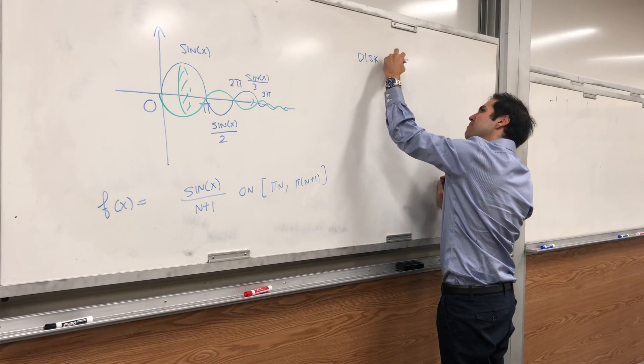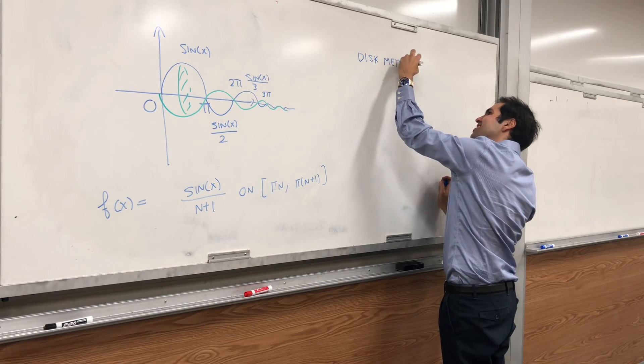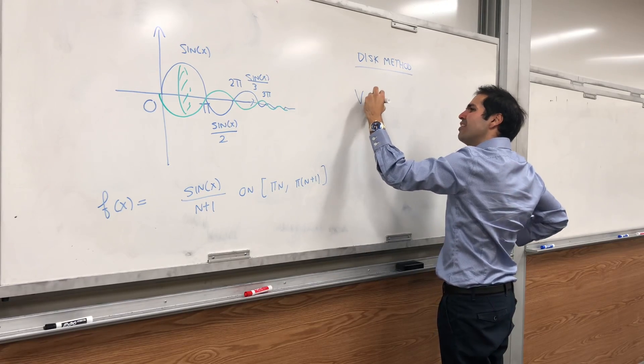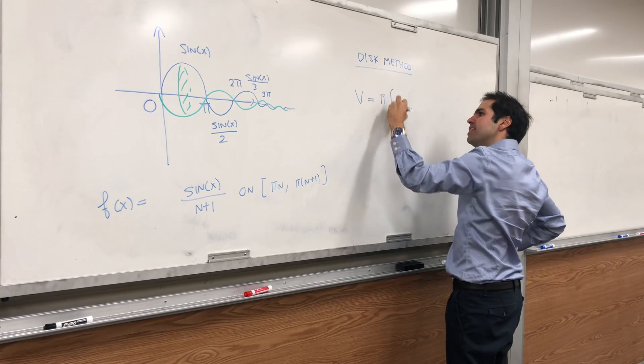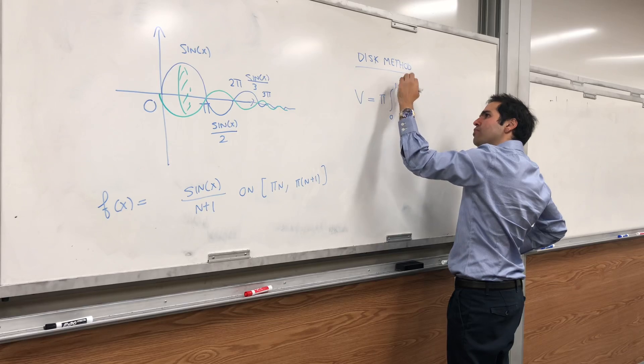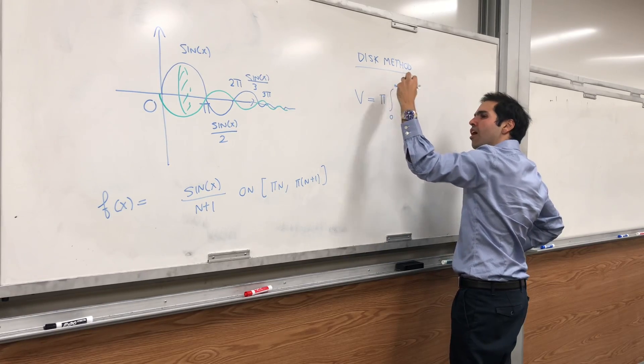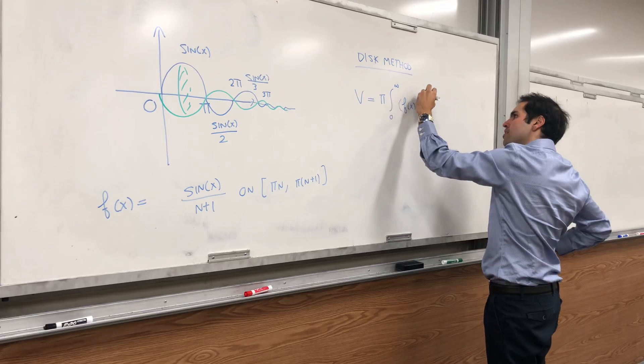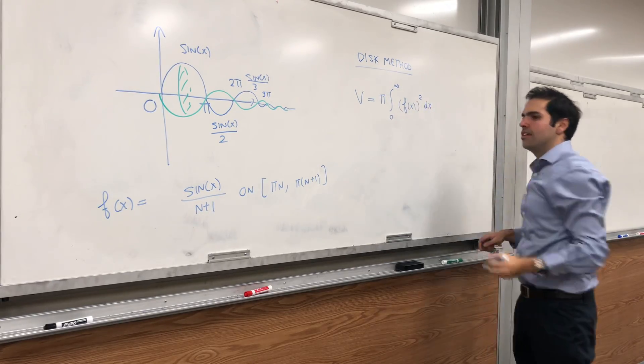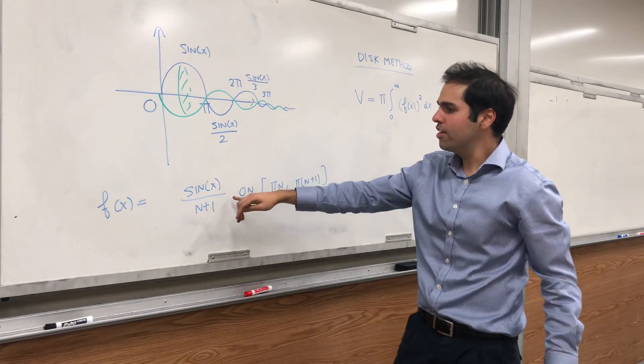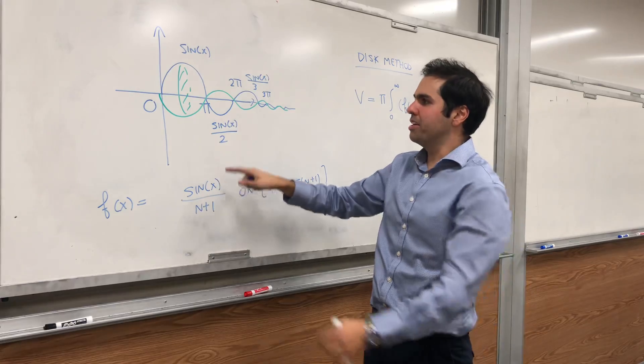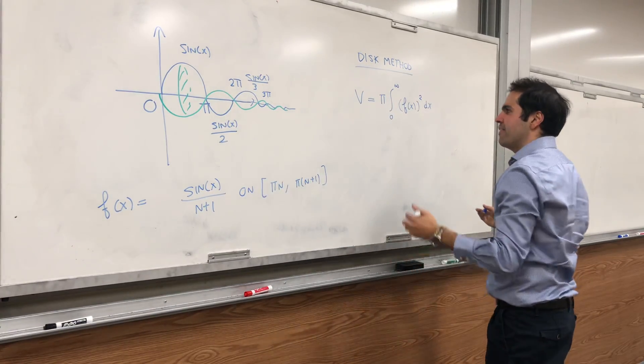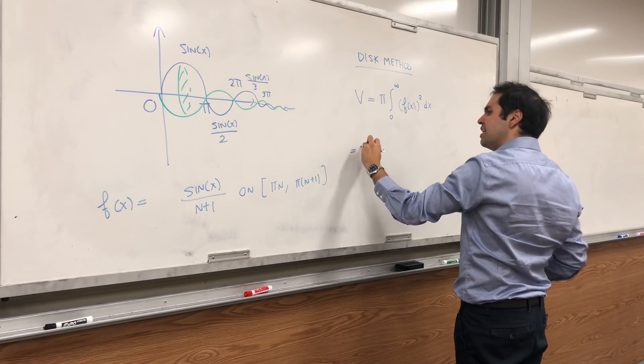So by the disk method, it's like a disk jockey but with methods, the volume is just pi times the integral from 0 to infinity of f of x squared. But notice, f has different components, right? Here it's sine of x, then sine of x over 2, sine of x over 3, etc.